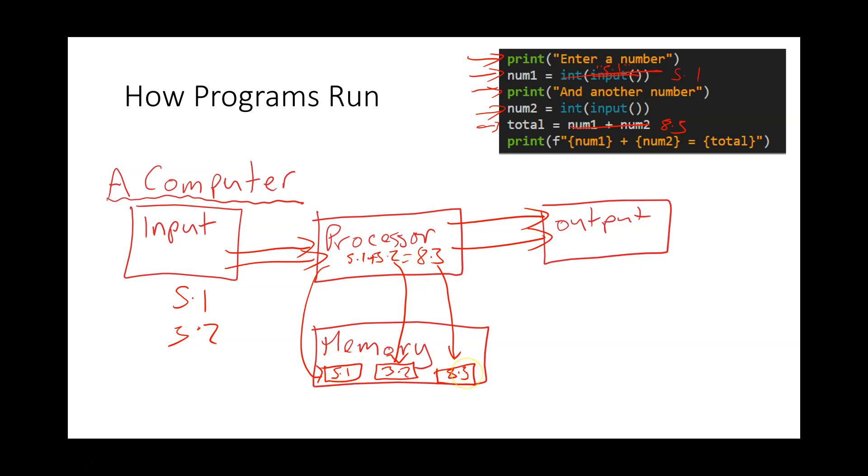Our final thing is we do some output, but the processor by the time it gets to here may well have forgotten all of this. So it has to go to memory yet again and read in the 5.1, read in the 3.2, and read in the 8.3. Then finally it can output: 5.1 plus 3.2 equals 8.3.